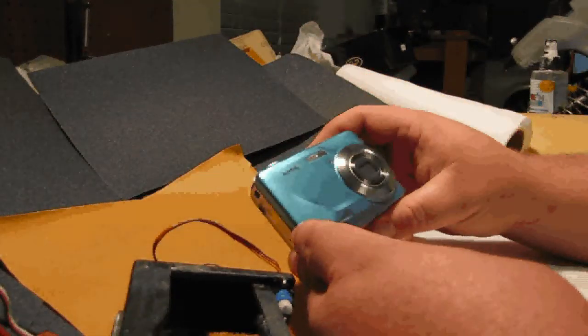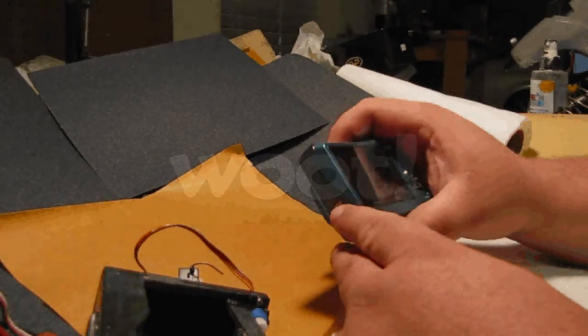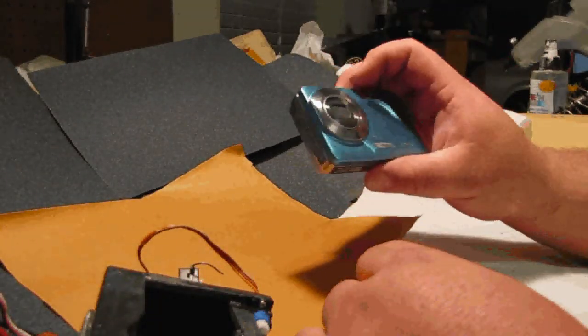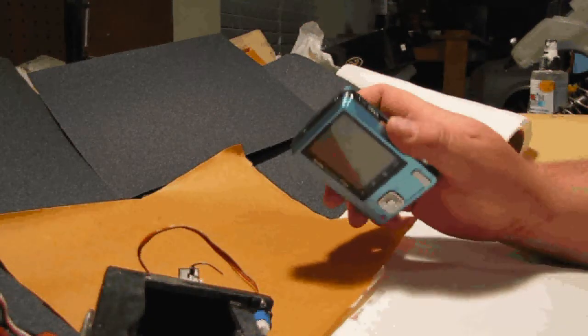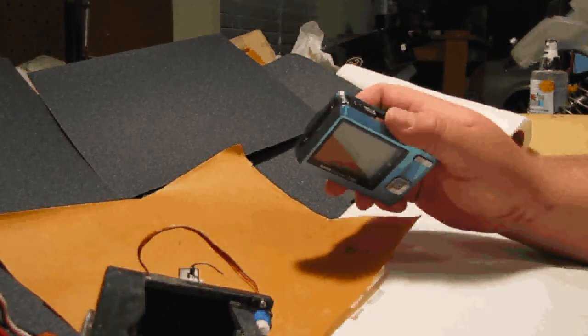This is a Kodak 10.2 megapixel C180. I got it from Woot.com, a good deal. I got it shipped for 50 bucks. Takes decent photos, nice and light. With batteries it's about six ounces, so that should be workable with my Super Cub which I'm gonna be using to take some aerial shots.